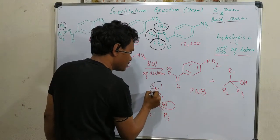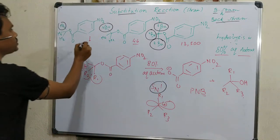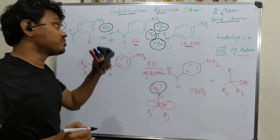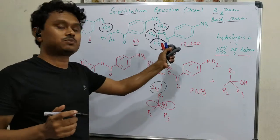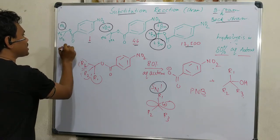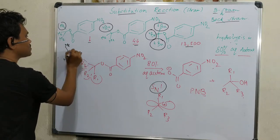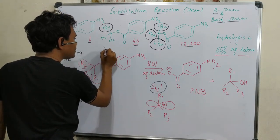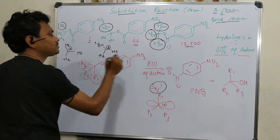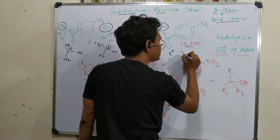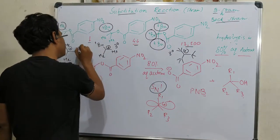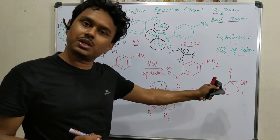And here also what happens, this follows SN1 reaction. Now, situation is that if we consider the relative rate, here one, here is 4.4 and here is 13,500, tremendously high. The question is why. That factor will be explained based on the B strain or the back strain. If you see it produces a tertiary butyl carbocation, this produces tertiary butyl and methyl, and this is tri-tertiary butyl carbocation. These are all tertiary carbocations. We know that tertiary carbocations are stable.